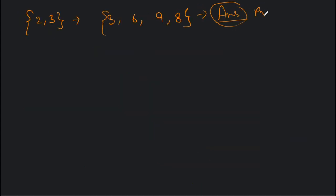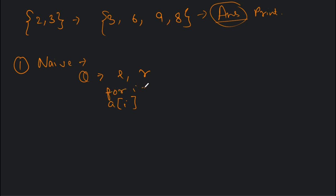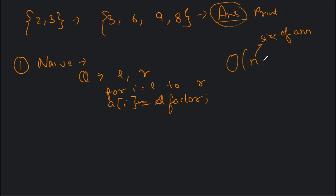The first approach is a naive approach. For every query with l and r, we go into the array and increment from i = l to r: a[i] += factor. This approach takes O(n * q) time, where n is the size of the array and q is the number of queries.